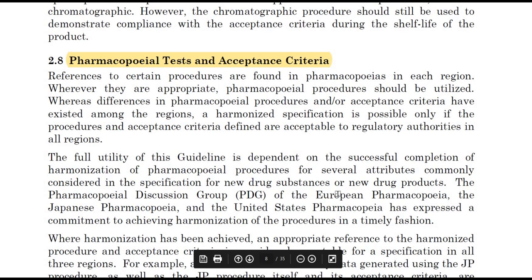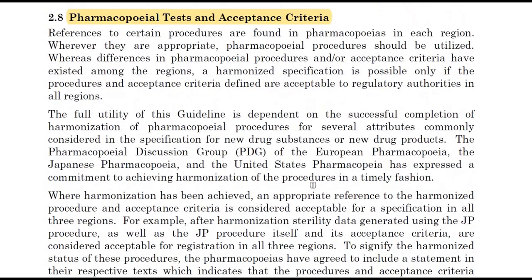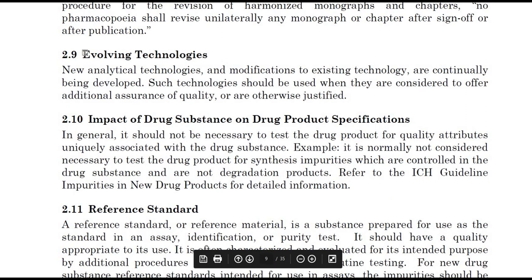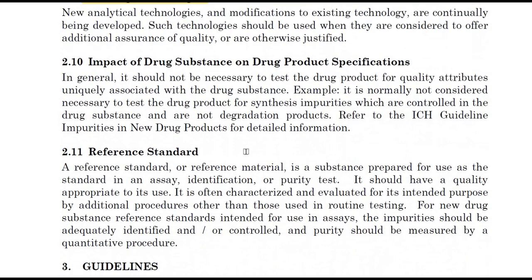Pharmacopial tests and acceptance criteria are found in the pharmacopeias in each region. Appropriate pharmacopial procedures should be utilized; where differences in pharmacopial procedures and acceptance criteria exist among regions, harmonized specifications are possible only if the procedures and acceptance criteria are acceptable to the regulatory authorities in all regions. Analytical technologies and modifications to existing technologies are continually being developed and should be used when they offer additional assurances of quality of the drug substance or drug product.